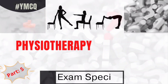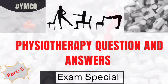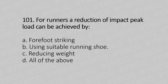Hello, welcome to Part 5 of the Physiotherapy Question and Answer MCQ series. Question number 101: For runners, a reduction of impact peak load can be achieved by — Option A: forefoot striking, Option B: using suitable running shoe, Option C: reducing weight, Option D: all of the above. The answer is Option D, all of the above.